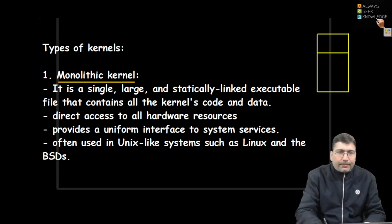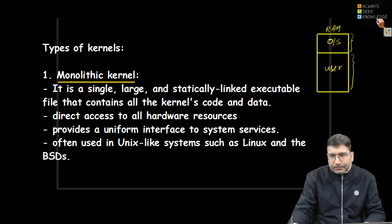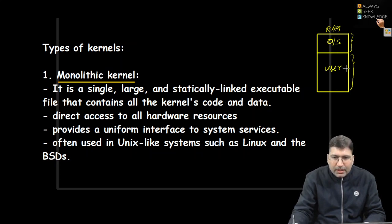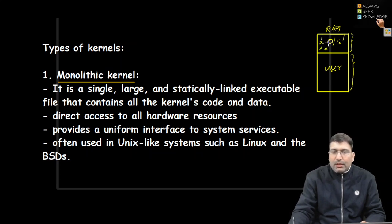Once we load the operating system, the first portion of RAM is allocated to the OS, and the remaining portion we consider as the user space. All the data and modules of the kernel — say four or five modules — are statically linked and loaded in kernel space. Whatever modules are loaded in kernel space, they get access to all resources and do not need to take permission from any other module.